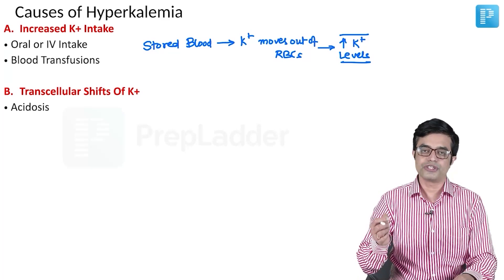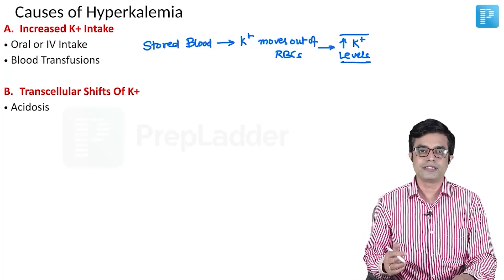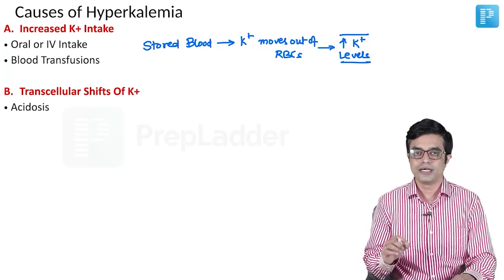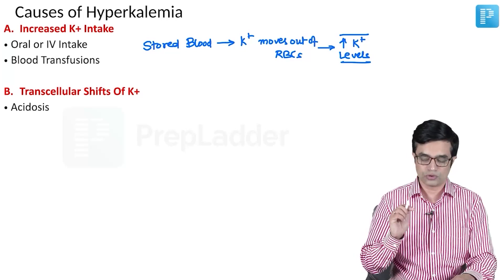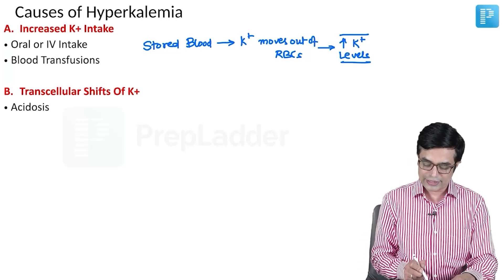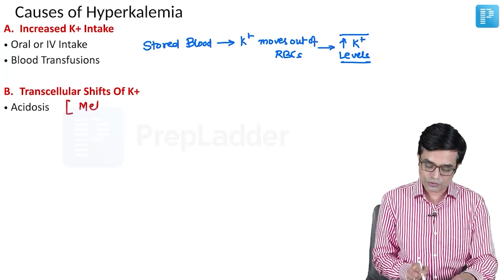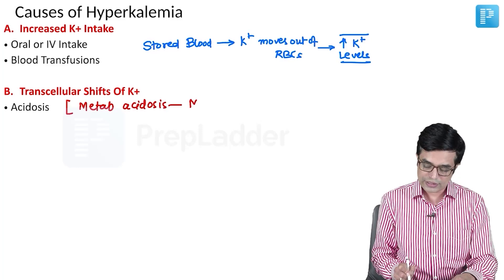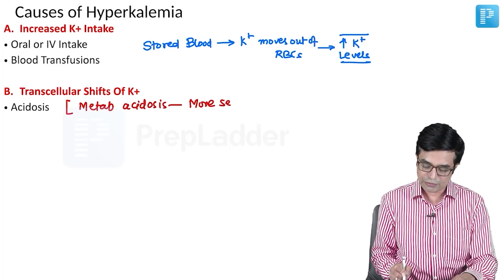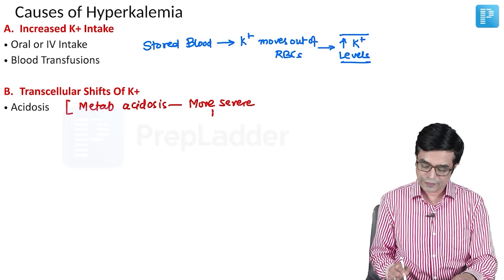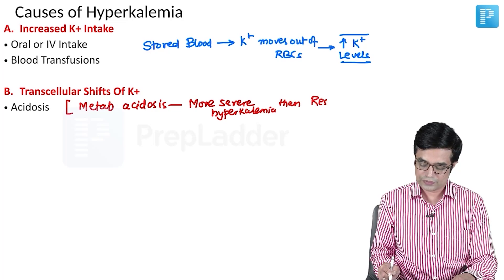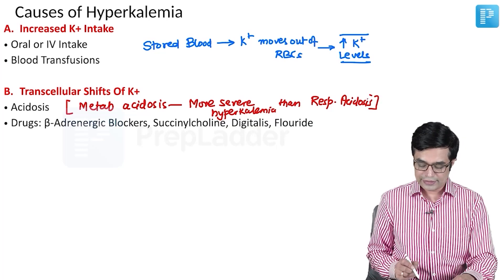Acidosis causes shifting of potassium to the outside. Whether it is metabolic acidosis or respiratory acidosis, hyperkalemia can occur in both. However, Nelson states that metabolic acidosis causes more severe hyperkalemia than respiratory acidosis. So metabolic acidosis is the stronger culprit. The second cause under transcellular shifts is drugs, and these drugs are very important — MCQ questions on these drugs have already been asked.